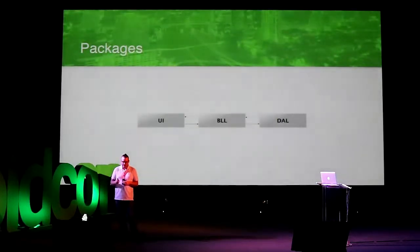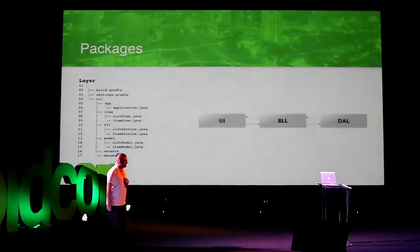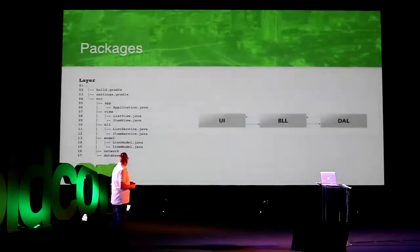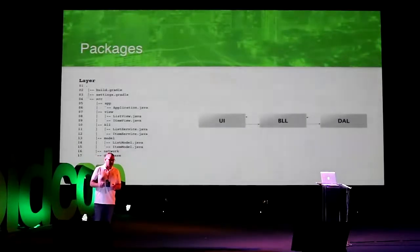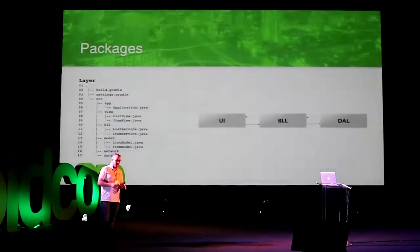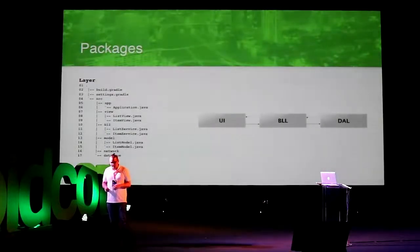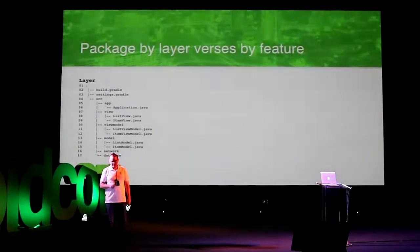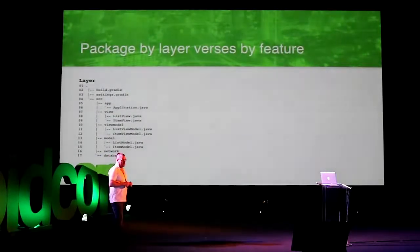I think the three-layer grouping is a good way of grouping things, but most developers do one thing that can be done a little bit better. Many developers take this layer grouping with them when they go into, for example, the UI layer. I think that as soon as we go into one of these boxes, we have to switch. We have to group by features instead of layers so that we get a better understanding.